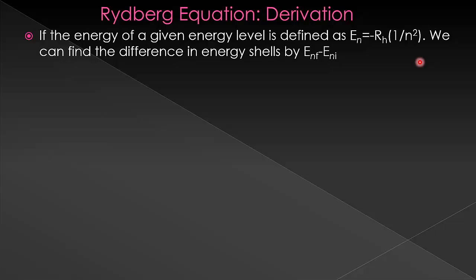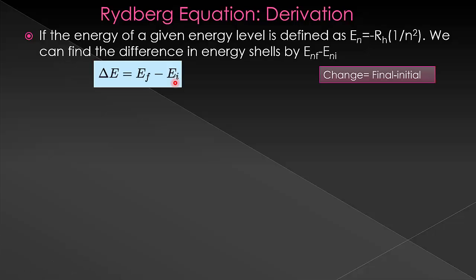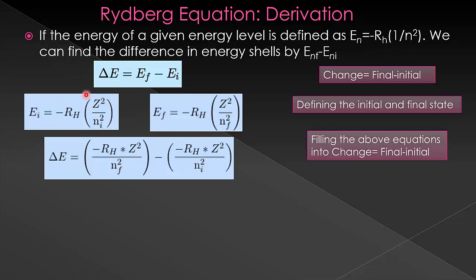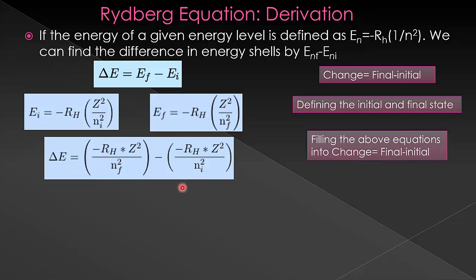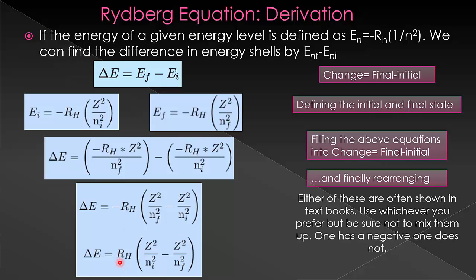We know that the energy levels are defined here. We have that from Rydberg. So we're gonna derive the Rydberg formula, the formula for the energy transitions, from this formula. We know that the difference in anything is final minus initial. So we're gonna start from there. From here, we know that each one of these E's encompass this equation, and so we'll fill that in. I've just added the equation for each energy level into this equation, adding an F and an I where appropriate.